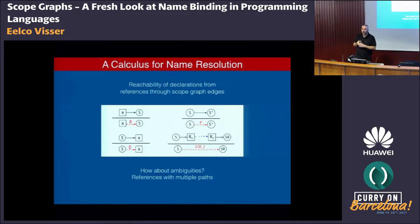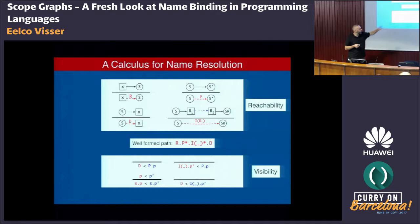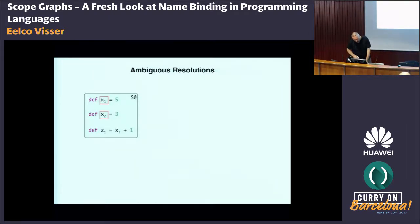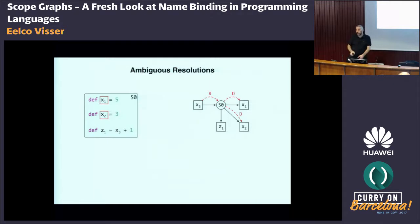But how about ambiguity? What if there are two declarations that can be reached from a reference? To deal with that, we extend this calculus with the notion of visibility, where we can disambiguate between multiple possible paths for a reference. It doesn't modify the reachability rules, but gives you a predicate for deciding between paths. Here's a basic example of a possibly ambiguous scope graph: we have a scope with two declarations for the name X at different occurrences. That means the reference X3 now has two possible paths — we can resolve it to X1 or to X2. So this resolution is ambiguous.